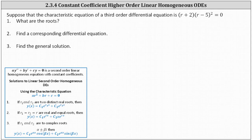Suppose that the characteristic equation of a third-order differential equation is the quantity r plus two times the square of the quantity r minus five equals zero. Because we have a characteristic equation, we know we have a third-order constant coefficient, linear, homogeneous differential equation.